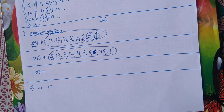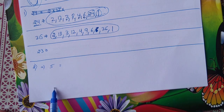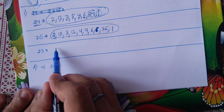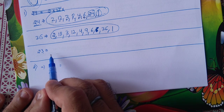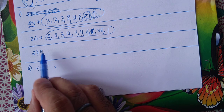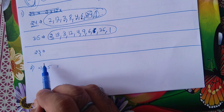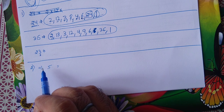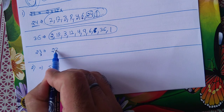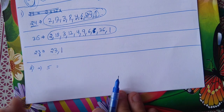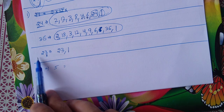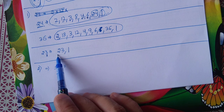कई बार कुछ tricky numbers आ जाते हैं, जैसे 23. अब 23, 2 के table में नहीं आता - 2 × 10 = 20, 2 × 11 = 22, 2 × 12 = 24. 3 के table में भी नहीं आता - 3 × 7 = 21, 3 × 8 = 24. 4, 5, 6, 7, 8, 9, 10 के table में भी नहीं आता. So 23 के only 2 factors हैं: 1 and 23 itself. This is a prime number - जिन numbers के only 2 factors होते हैं (1 and itself), उन्हें हम prime numbers कहते हैं. This was the only tricky concept in exercise 3.1.